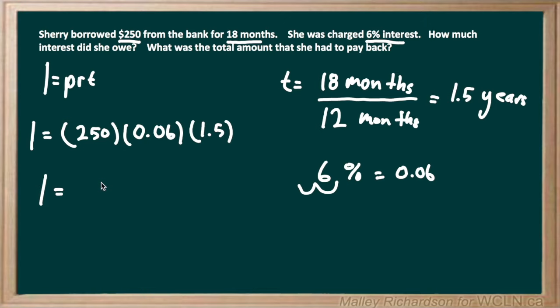250 times 0.06 times 1.5 gives us $22.50. So the interest that she owed is $22.50.